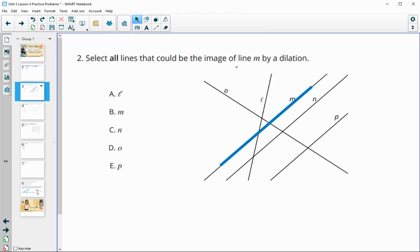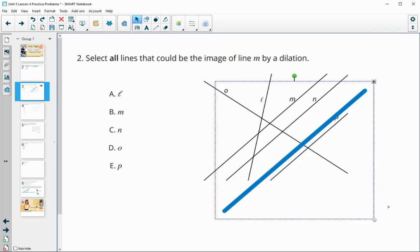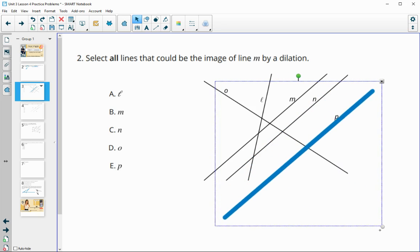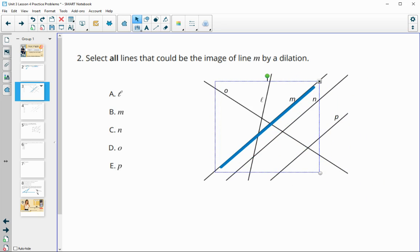Number two, select all lines that could be the image of line M by dilation. So remember that lines, when they're dilated, can be taken to parallel lines. So if we kind of look at this, here's the dilations of line M. And so we can kind of see that if M were dilated by a scale factor of one, it would be itself. It could go to N. It could also go to P. So those are the three. Could not go to O or L because that would have a rotation with it. So M, N, and P.